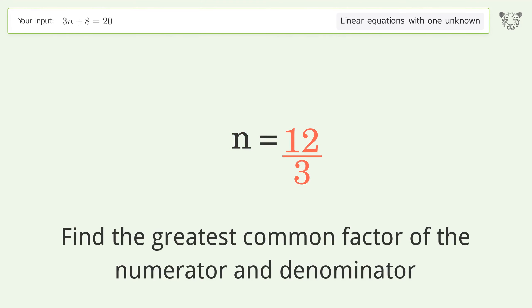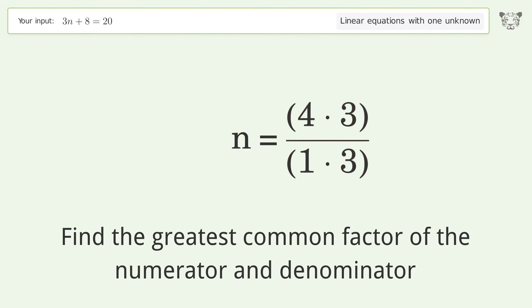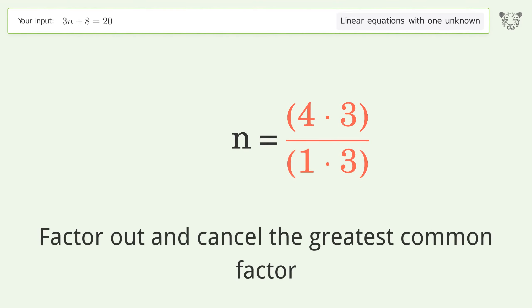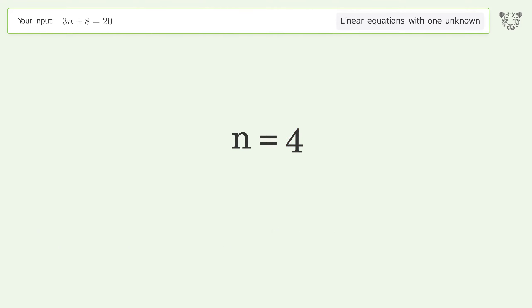Find the greatest common factor of the numerator and denominator. Factor out and cancel the greatest common factor. And so the final result is n equals 4.